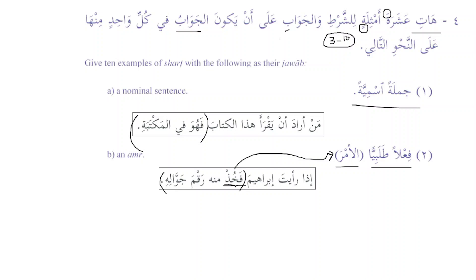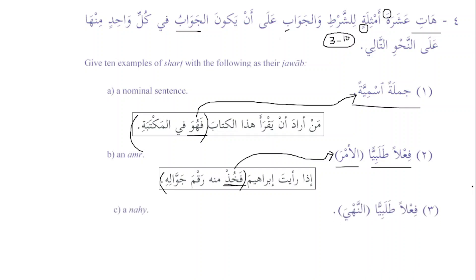Why is fa added? Because it is connected to fa'il talibi. Whenever fa'il talibi happens to be the jawab al-shart, fa will be added. One of the conditions where fa is added is when jawab al-shart is jumla ismiyya. These small things you need to remember. Then jawab al-shart should also be nahi — prohibition.